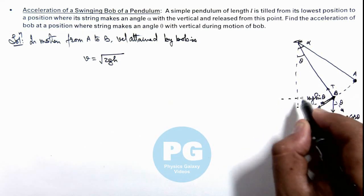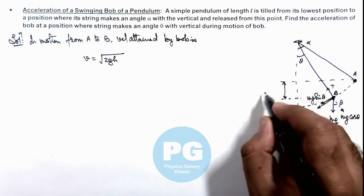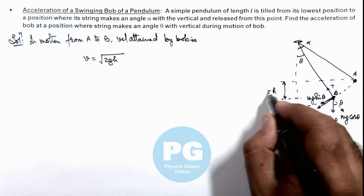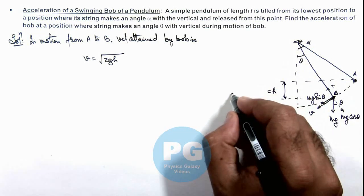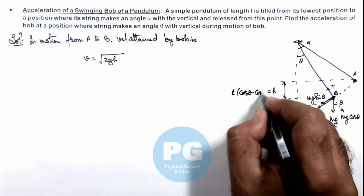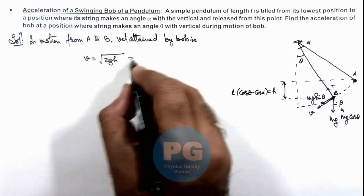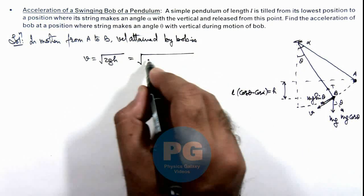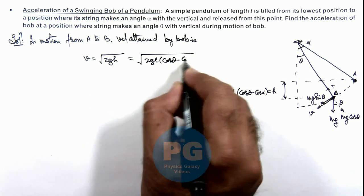As this value of h is equal to - this length is l cos theta and this is l cos alpha, so this will be l(cos theta - cos alpha). So if we substitute the value of h over here, this will be √[2gl(cos theta - cos alpha)].